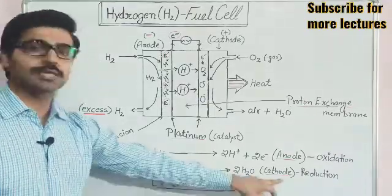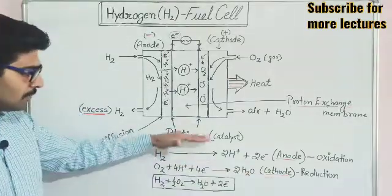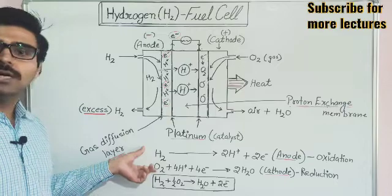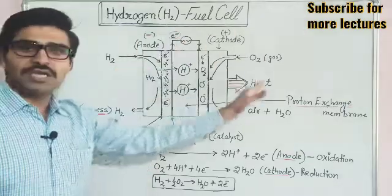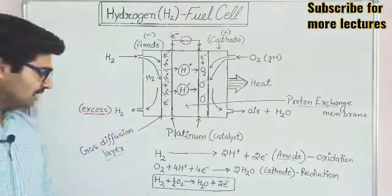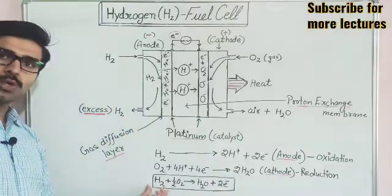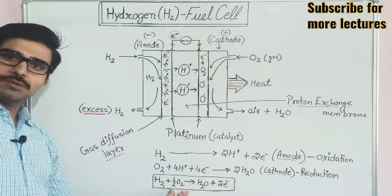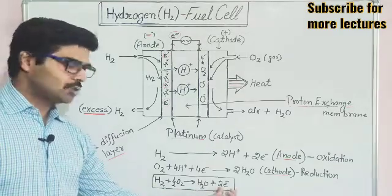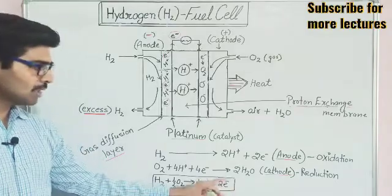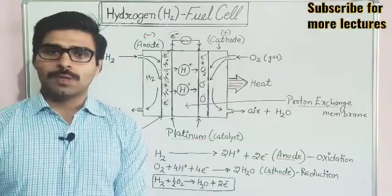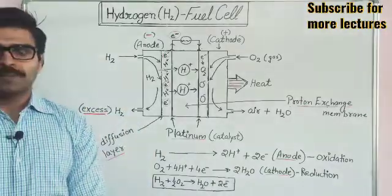Oxygen, protons, and electrons all react with each other at the cathode to form water molecules — this is the reaction at the cathode. If we combine both reactions, the overall reaction in the hydrogen fuel cell is: hydrogen molecule reacts with oxygen molecule to generate water and two electrons. These two electrons are the source of electrical energy.